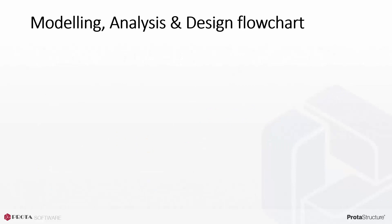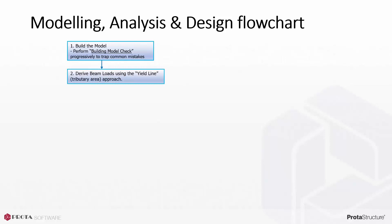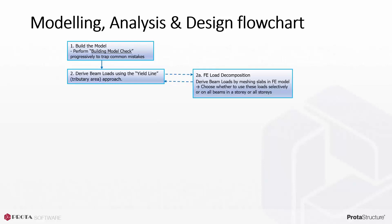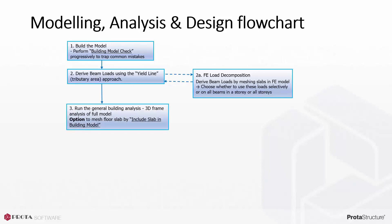Let us now look at the modeling, analysis, and design flowchart. We first start by building a 3D physical model. It is highly recommended to perform building model checks progressively to trap common modeling mistakes as you build. As you model beams and slabs, the beam loads are automatically derived using the default yield line or tributary area method. FE load decomposition is the alternative method to yield line slab load calculation, deriving beam loads by meshing the slabs in the FE model. This method can capture localized effects of slab openings and concentrated slab loads such as slab line loads, and can be applied to selected or all beams in selected stories or for the whole model. The general building analysis can then be run to generate the column, wall, and beam design forces.